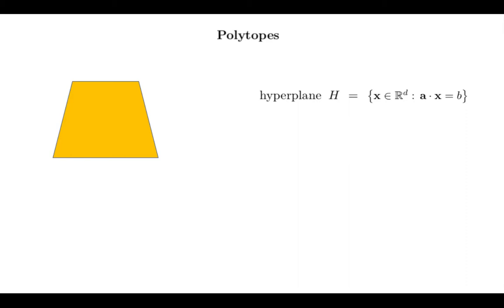A polytope is inherently a linear object. It is described by linear constraints, and this gives a second description of a polytope, namely as the intersection of a finite number of half spaces. So we should define these terms. So a hyperplane is a set of the form where I have one linear equation, and this hyperplane gives rise to a half space by changing this equation to an inequality.